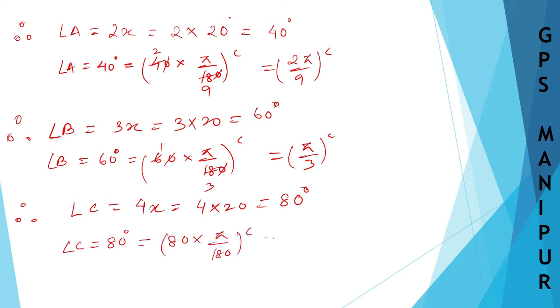This simplifies to 4π by 9 radians. So angle C is 4π by 9 in terms of radians.